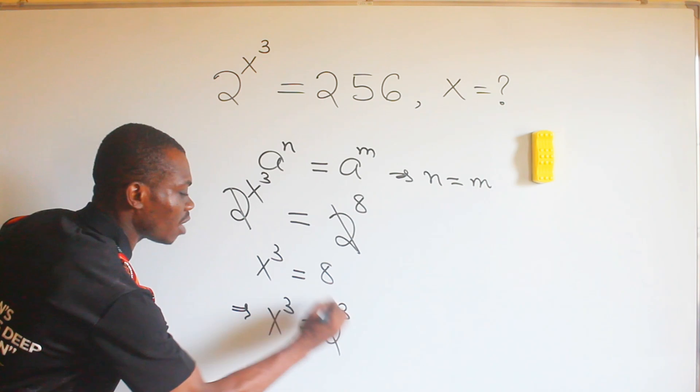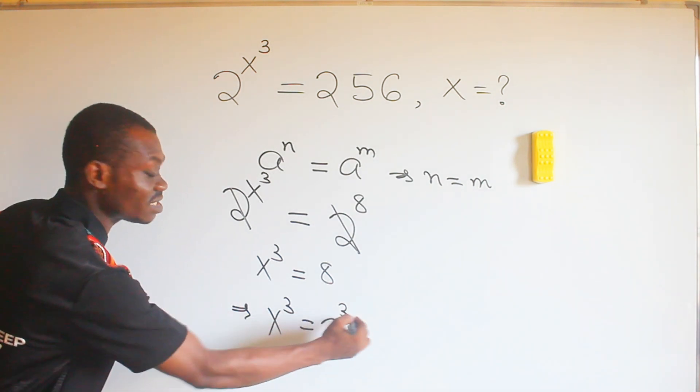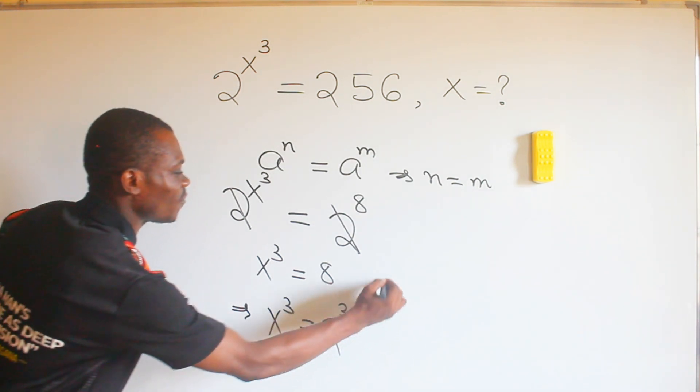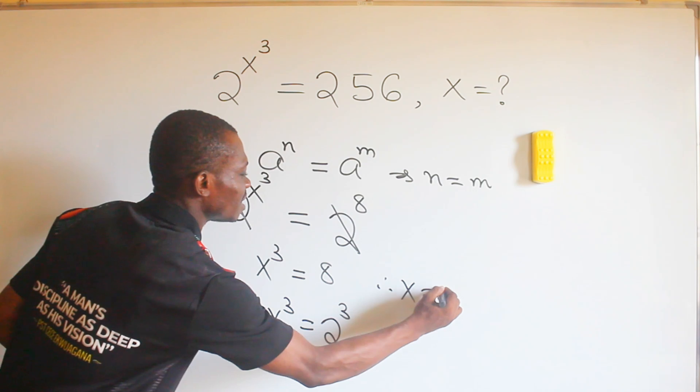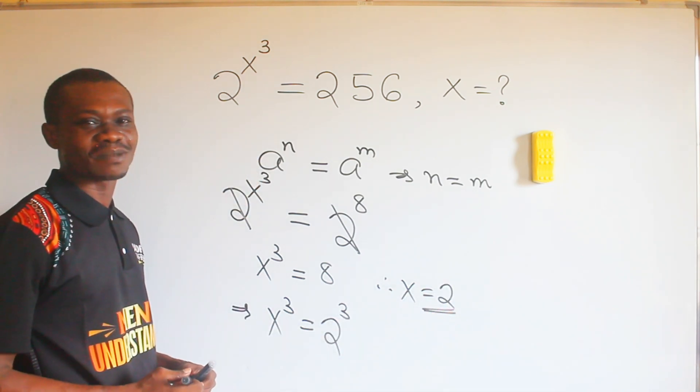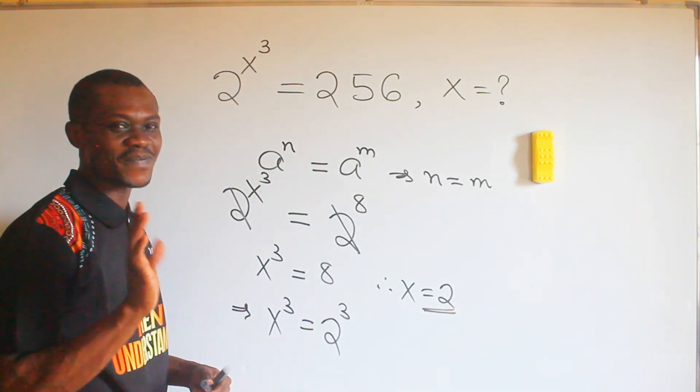So this implies, of course, we can write 8 as 2 raised to the power of 3. And so since the powers are the same, therefore now our x is equal to 2. I hope that makes sense. Subscribe to my YouTube channel, bye.